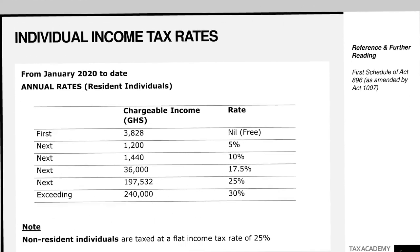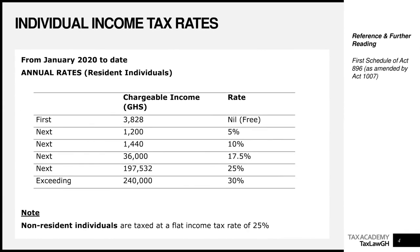Next we'll look at the applicable tax rates. Basically, this is the tax table — some people call it the graduated tax rate, but what the law calls it is the individual income tax rate or the personal income tax rate for resident individuals. You can see it is in separate tax bands.